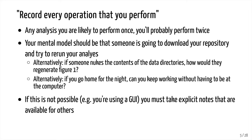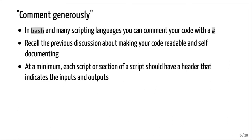If automation isn't possible because you're using a GUI like ARB software, you really have to take explicit notes that are available for others, and again, including yourself. When commenting generously in Bash and many other scripting languages, you can use comments by putting a pound sign before the comment — that tells Bash, R, or whatever language to ignore everything that follows. We want to make all our code readable and self-documenting as much as possible. At a minimum, each script or section of a script should have a header that indicates the inputs, outputs, and what's going on.